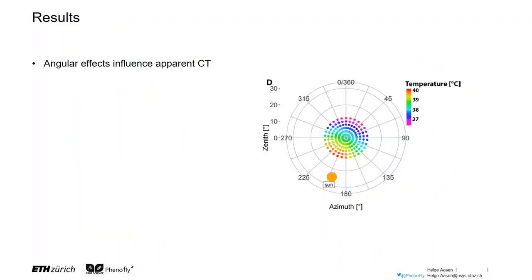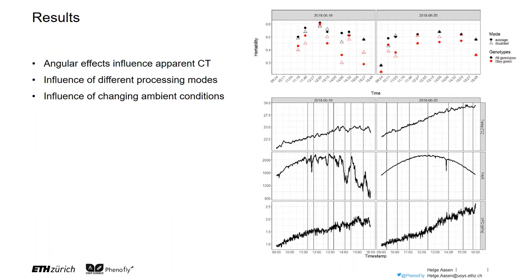Our results show that angular effects impact the apparent canopy temperature and that this needs to be taken care of. Also, we looked into the influence of the different processing modes available for multi-view UAV imaging thermography, and also the influence of changing ambient conditions during different flights.